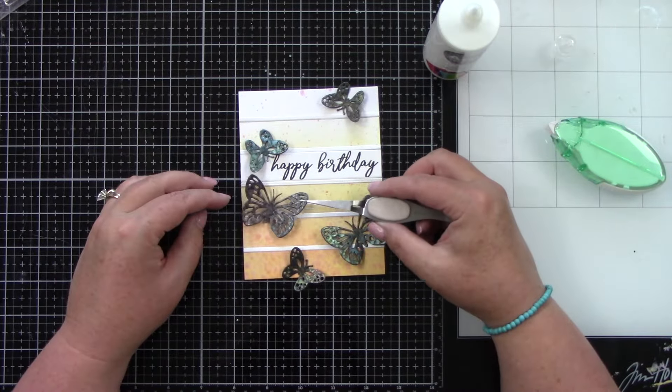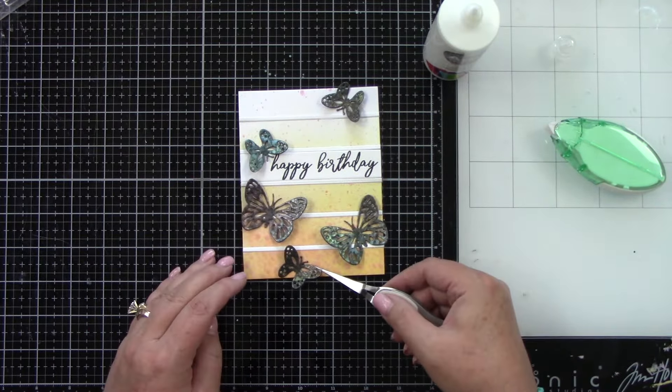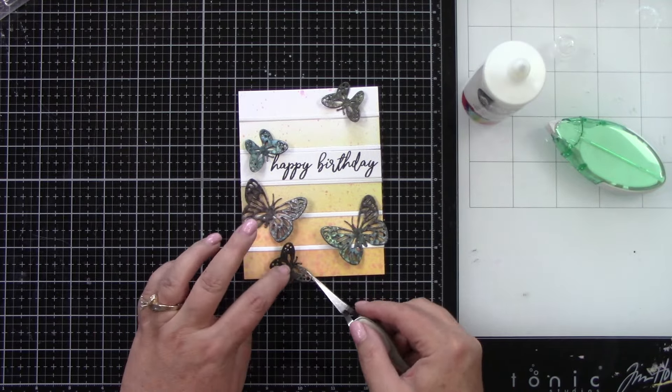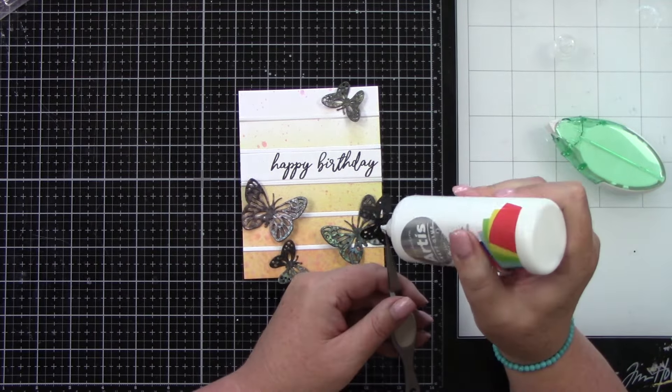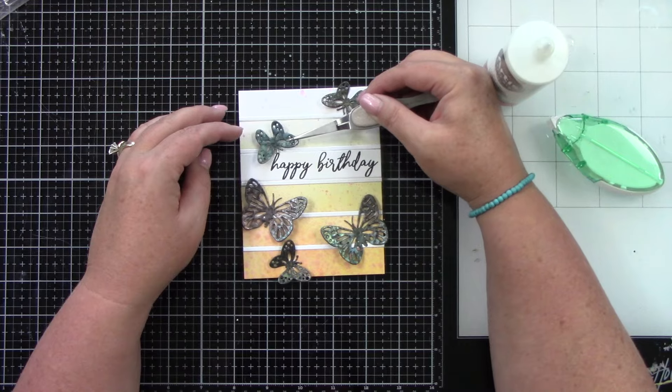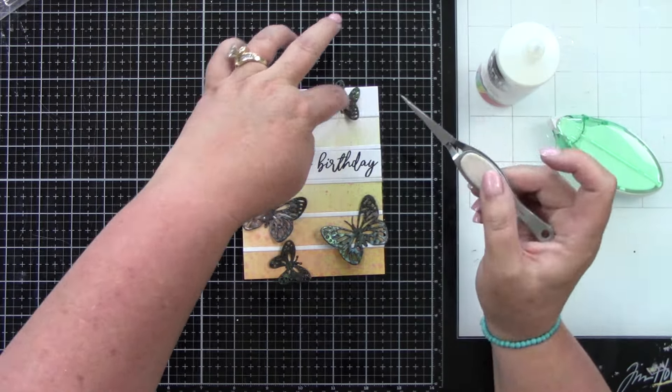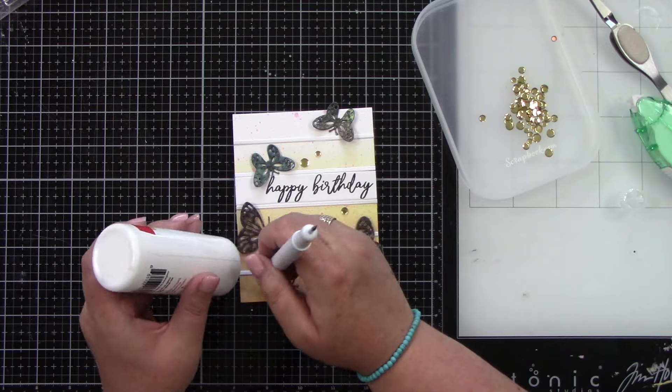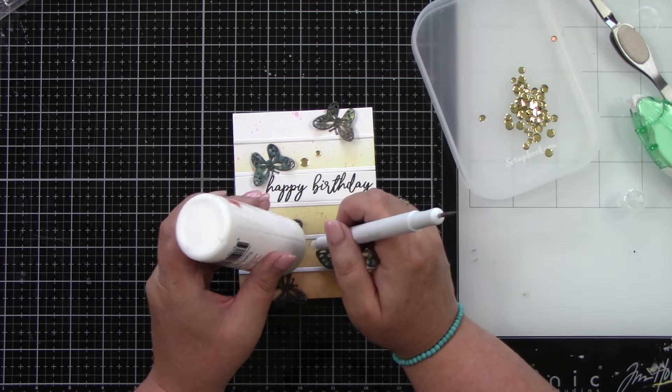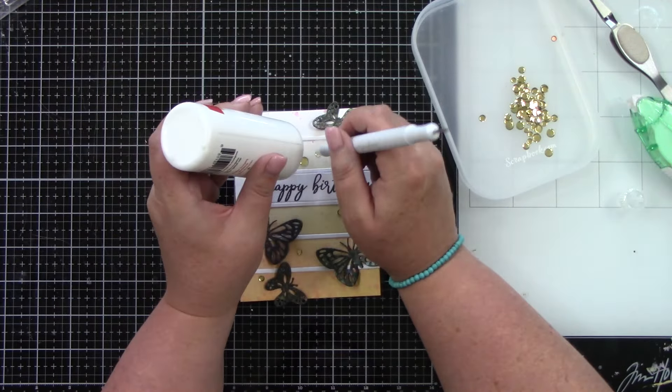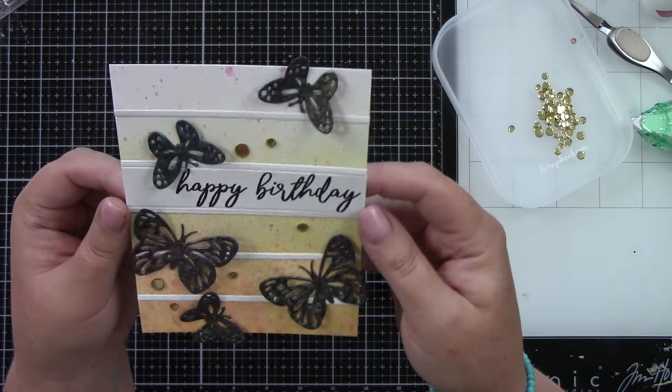So the recap of the techniques was tone on tone, spraying it through a stencil, spraying it on a different color of ink and on white cardstock. And then this fifth and final one, spritzing it on black cardstock. I'm going to add a few gold sequins here from Spellbinders.